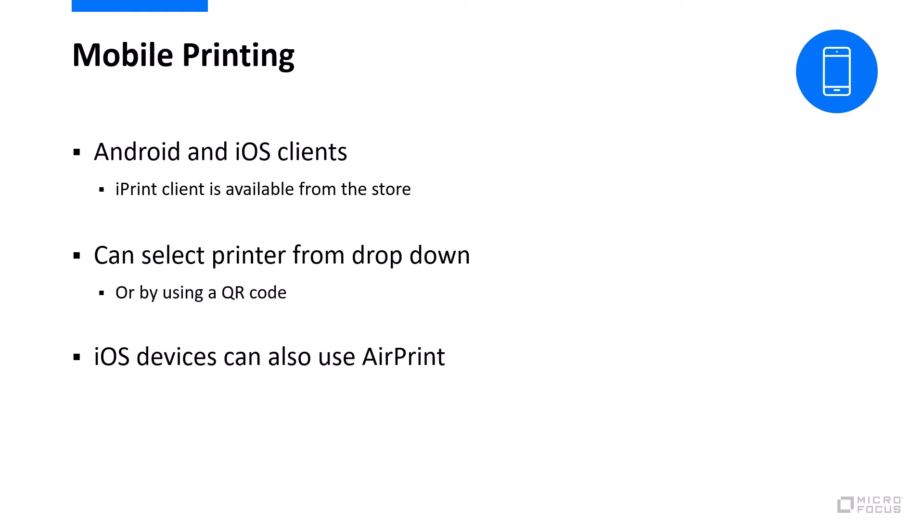The next thing I want to talk about is mobile printing. This allows you to print through iPrint from your mobile devices, and we have apps for Android and iOS devices that you can download from the appropriate store. When you print, you can select the printer from a dropdown. Something quite nice, especially if you've got lots of printers and it can get confusing, is to just put a QR code on the side of a printer. When selecting your printer, you can just point your mobile device at that QR code and it will automatically select it.